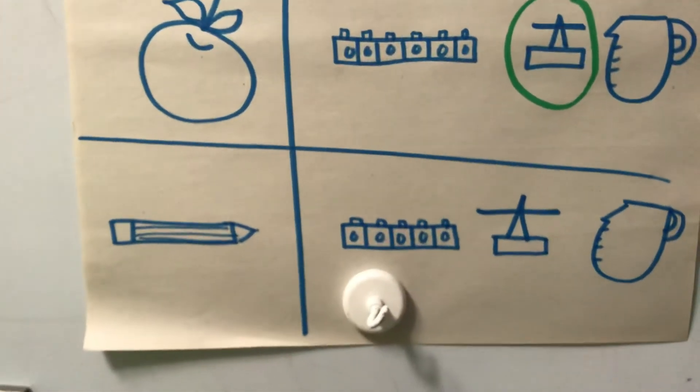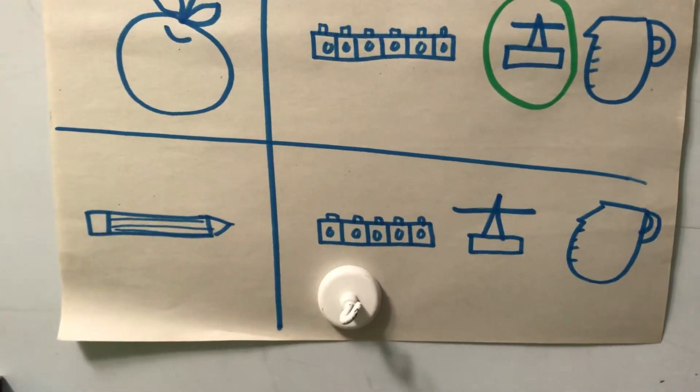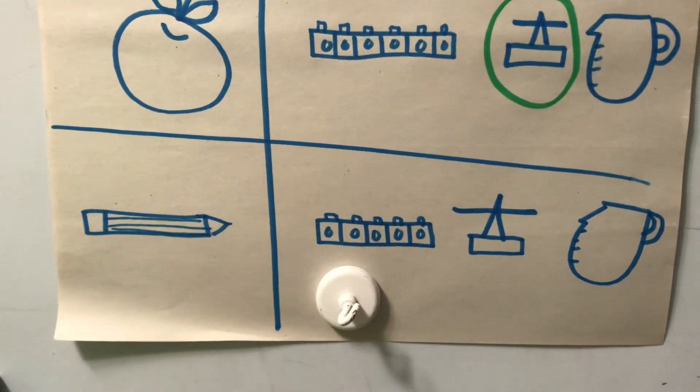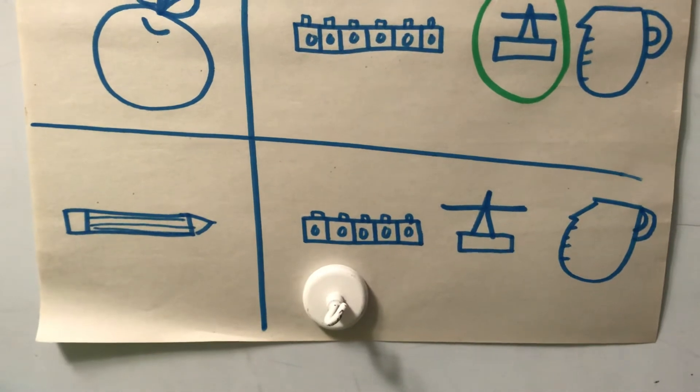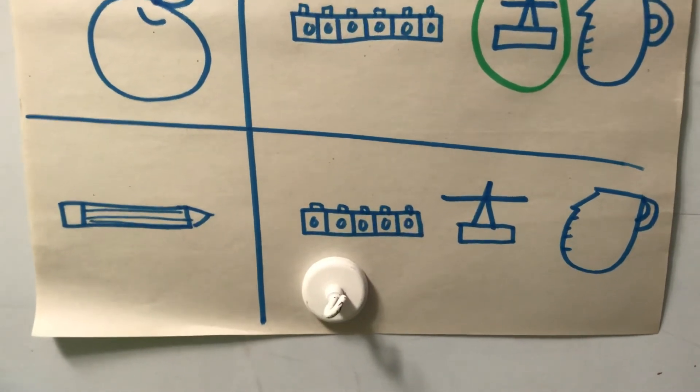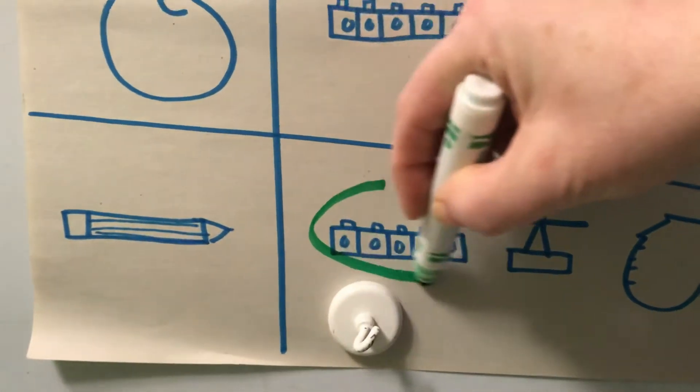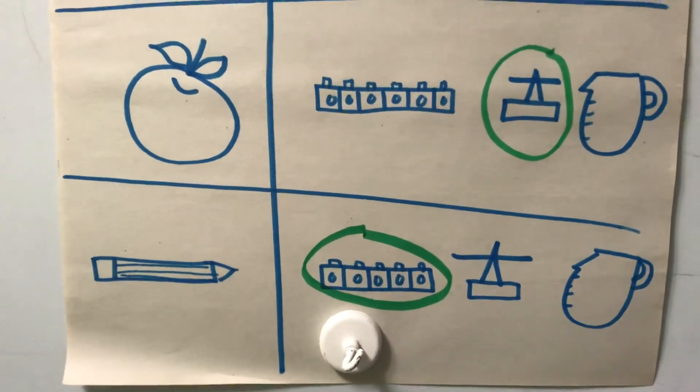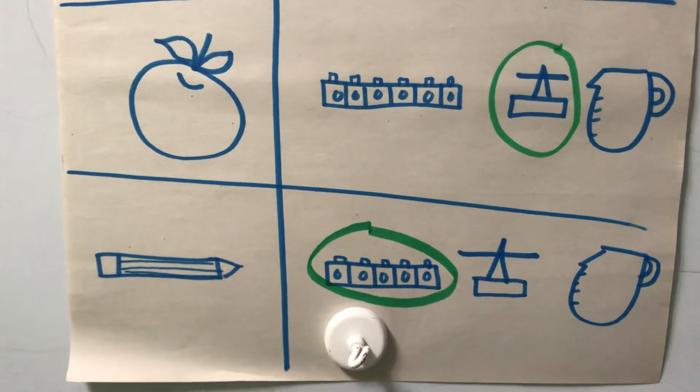Let's look at the last one. The last one is a pencil. If we want to see how long a pencil is, would you use cubes to measure it, a scale, or a measuring cup? You're right, the best way is for us to use cubes. Cubes will help us measure the pencil much faster. Great job.